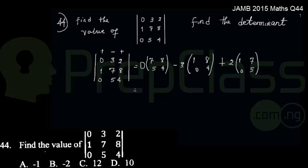From here, we notice that 0 multiplied by anything would give us 0, so I'll have 0. Now I'm going to find the determinant of this 2 by 2 matrix.